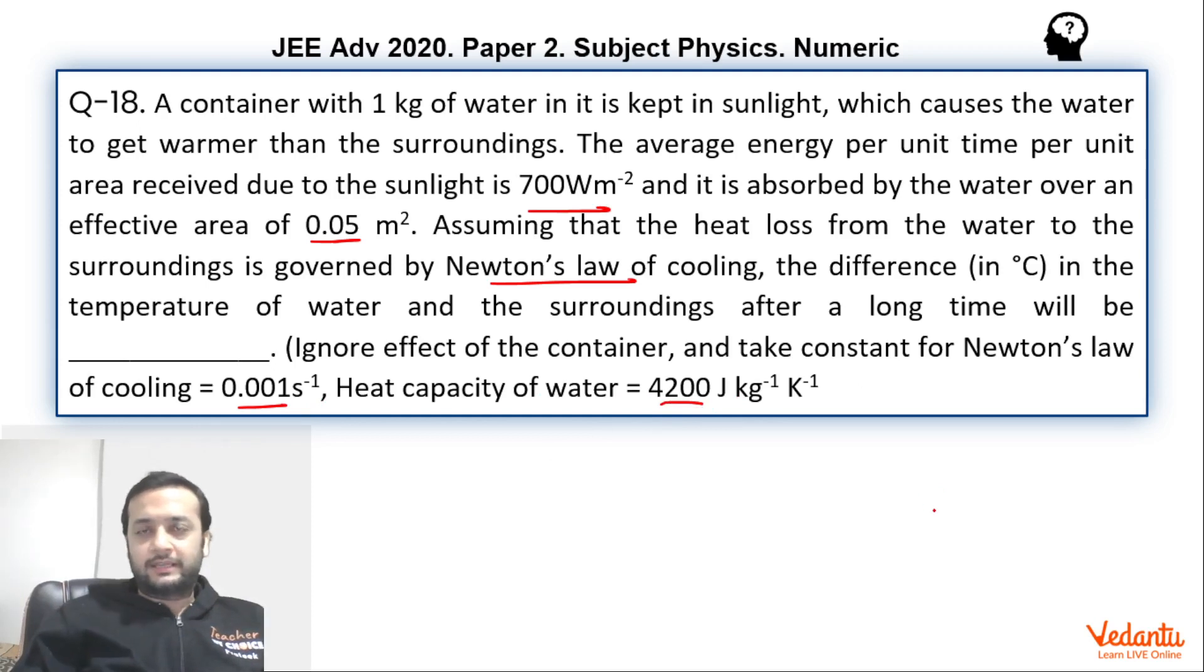So first let's solve the question and then I'm going to talk about the interesting point. So question per se is very easy. If you think that this is water, we can say that total heat falling on this water will be the area, exposed area which is 0.05 into total intensity which is 700. So this is the rate at which heat is falling. So at steady state, if we talk about the steady state, the rate of heat fall would have been the rate of heat loss, which is nothing but DQ by DT. So basically the rate of heat loss.